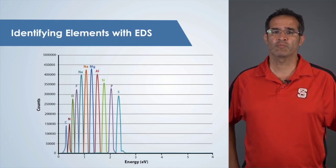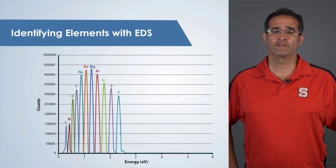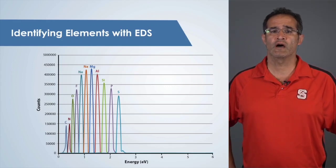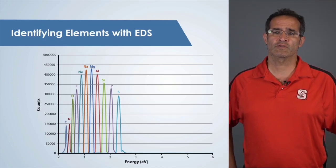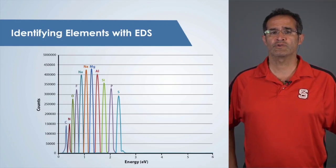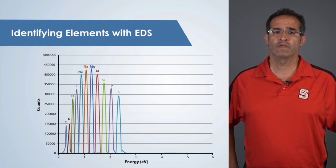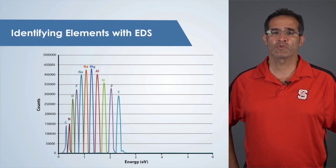On this spectrum, the software plots the number of x-rays as count or intensity on the y-axis versus the energy of the photons counted in kilo electron volts, or keV, on the x-axis. Remember, each element has its own characteristic x-rays, each with a unique energy measured in keV. EDS software helps to match the measured peaks along the x-axis with their respective elements.